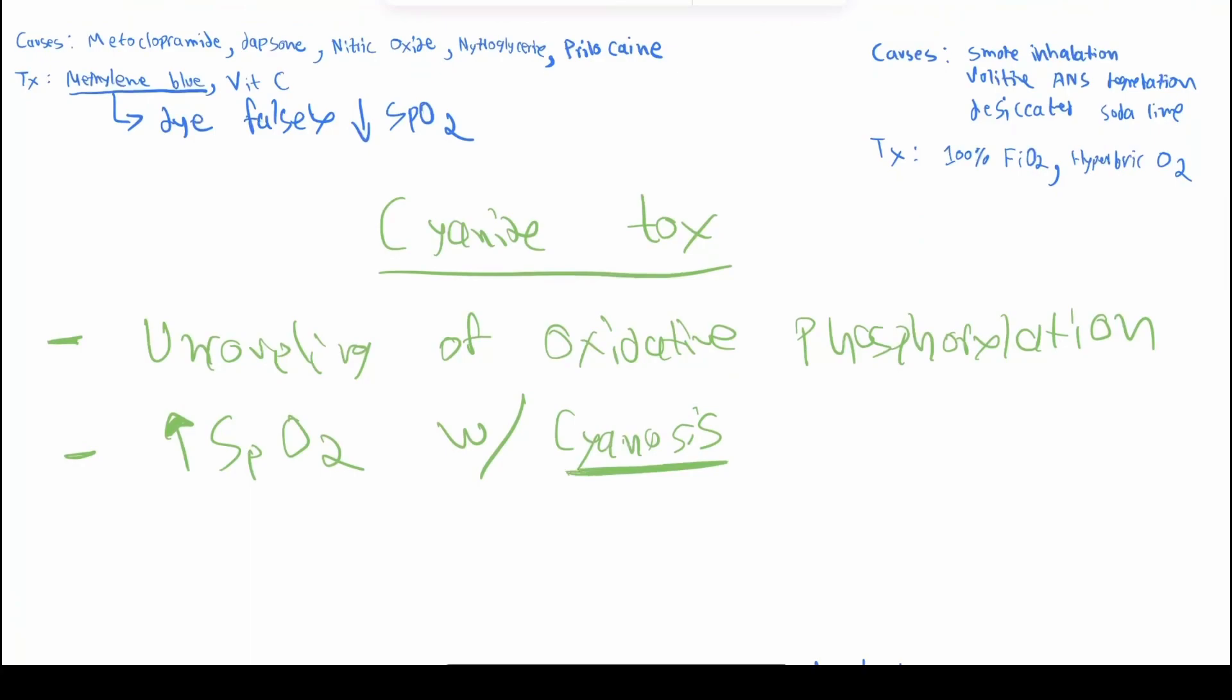It's because cyanosis, when you see it clinically, usually the SpO2 is going to be around 85%. Or you will see that. In this case, you won't see that despite the high SpO2 and cyanosis.